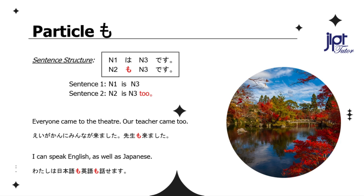Everyone came to the theater. Our teacher came too. 映画館にみんながきました。先生もきました。 I can speak English as well as Japanese: 私は日本語も英語も話せます。